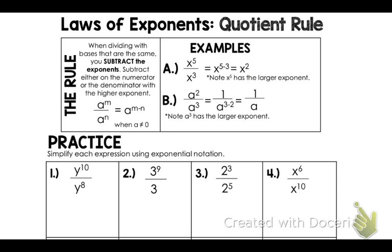The reason I'm not doing two minus three is because that results in a to the negative one. Once we cover the negative exponent rule, that's actually one over a — when you have a negative power you move it to the bottom, or vice versa. Since you haven't learned that rule yet, just look at the bigger number and subtract.